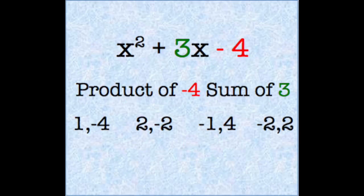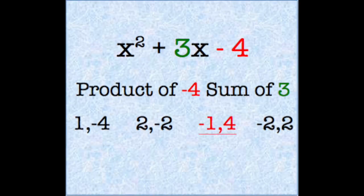Let's look at our product factors of negative 4. We see that all these pair numbers do multiply together to make negative 4. But which one adds together to make 3? Only the pair of negative 1 and 4 will make a product of negative 4 and a sum of 3.